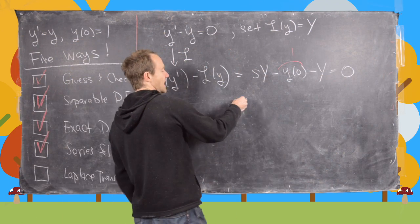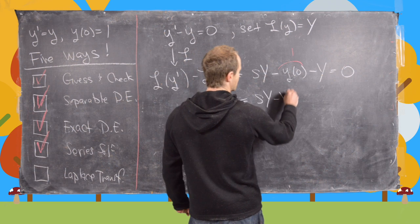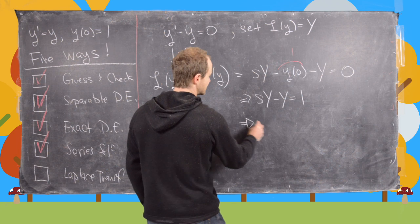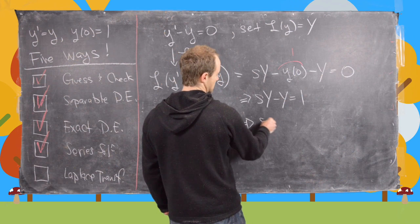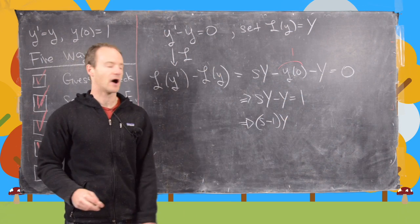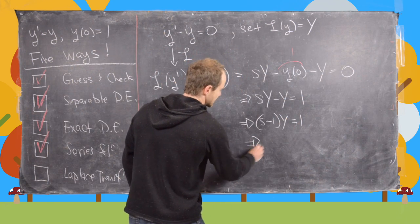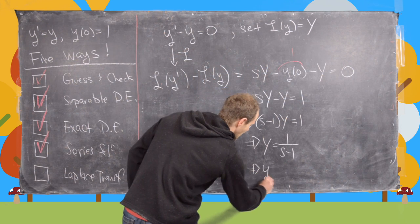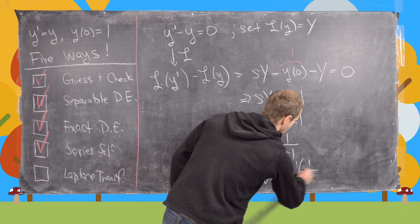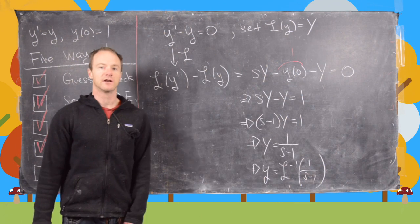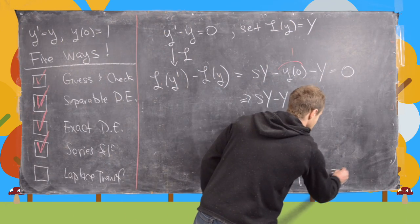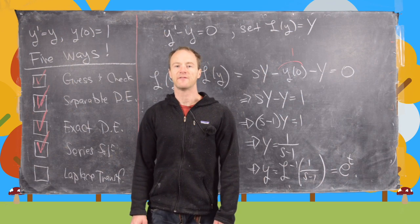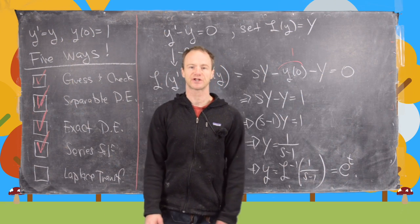Moving the 1 to the other side, we get s times Y minus Y equals 1. Factoring out Y gives (s minus 1) times Y equals 1, so Y equals 1 over (s minus 1). Our solution is the inverse Laplace transform of 1 over (s minus 1), and looking it up in a table, that equals e to the t. That finishes this video of calculating the solution to this differential equation five ways.